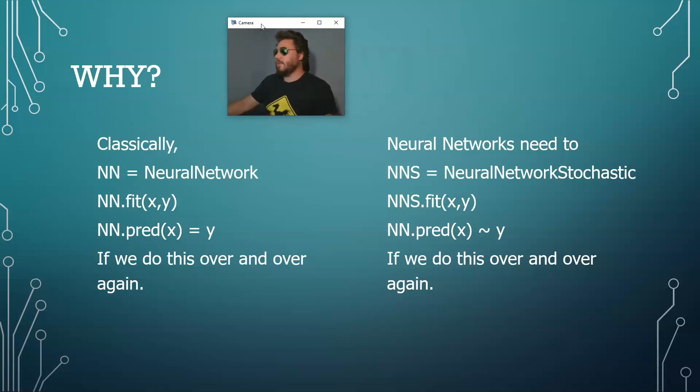Now if we do neural networks with the stochastic activation function, i.e. neural networks moving neurons, we're going to fit with x and y and we're going to run this over and over again. So we're going to fit with x and y, do the prediction, it's going to be kind of y, we do it again and it's going to be kind of y.